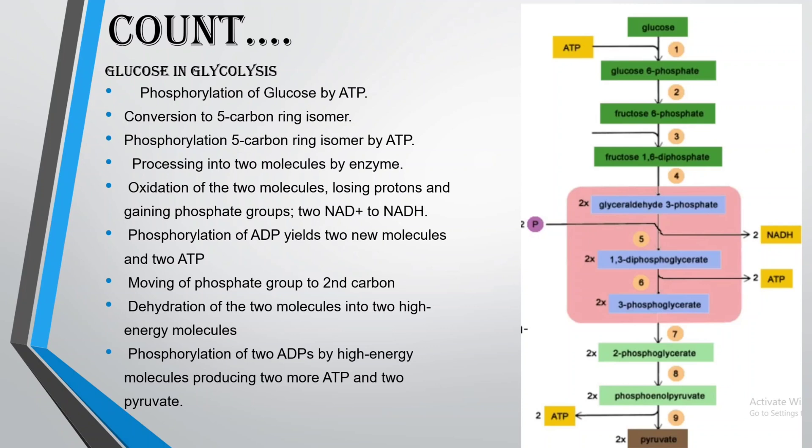The two molecules are dehydrated into two high-energy molecules. Phosphorylation of two ADPs by these high-energy molecules produces two more ATP and two pyruvate.